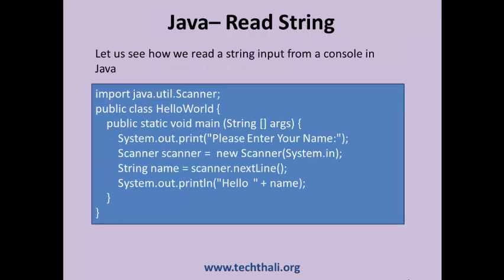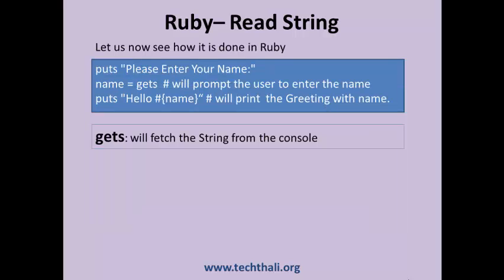The following example demonstrates how we can read a string input from a console in Java. System.in is used for this purpose in Java. In Ruby, the gets method is used to read a string from the console.